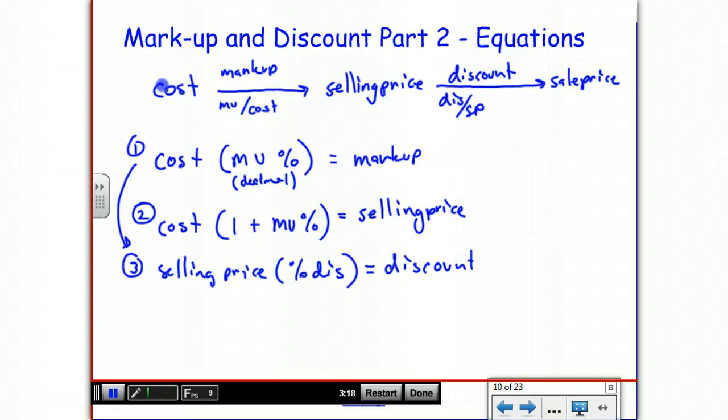So if you're taking 30% off of something and you multiply that times the price, that doesn't give you the new price, it gives you the discount, and then you have to subtract from the selling price to get the sale price.